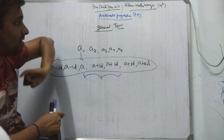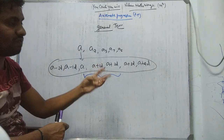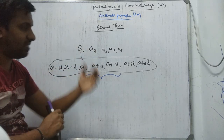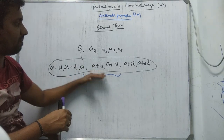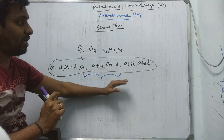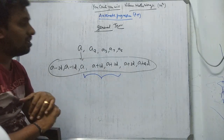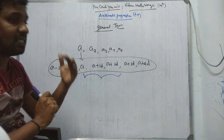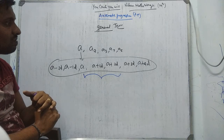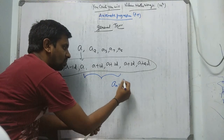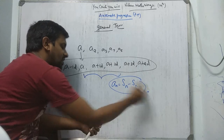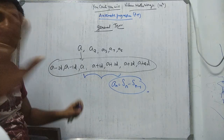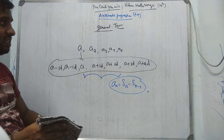The AN formula is used to find: number of terms, which term, first term, or the difference. SN formula is used to find the sum of N terms — sum of 15 terms, sum of 20 terms. And there is one more formula: AN equals SN minus SN minus 1. This I will clarify later. Word problems will also come in this chapter. It's a real-life, very easy chapter. Next video I will start with examples and exercises.